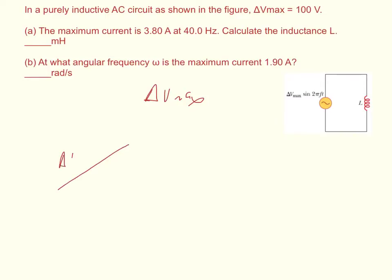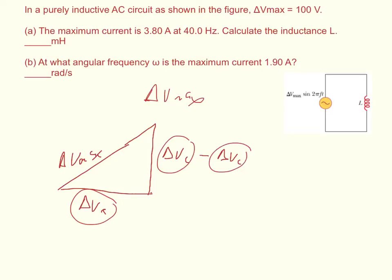So here's delta V max, we're drawing our phase picture again, and over here is delta V of a resistor, and then over here, this side of the triangle would be delta V of an inductor only minus delta V of a capacitor. We're looking at the change of the voltage across the resistor, the change of voltage across the inductor, the change in voltage across the capacitor. The delta V max is going to be the vector sum of those things. And so right down here, we have an angle phi.